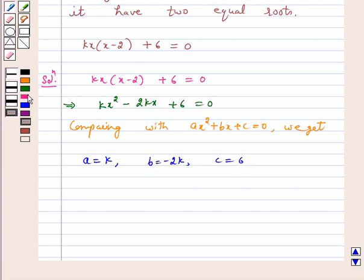Now, let us find out the discriminant. Therefore, b square minus 4ac is equal to minus 2k whole square minus 4 into k into 6, which is equal to 4k square minus 24k.